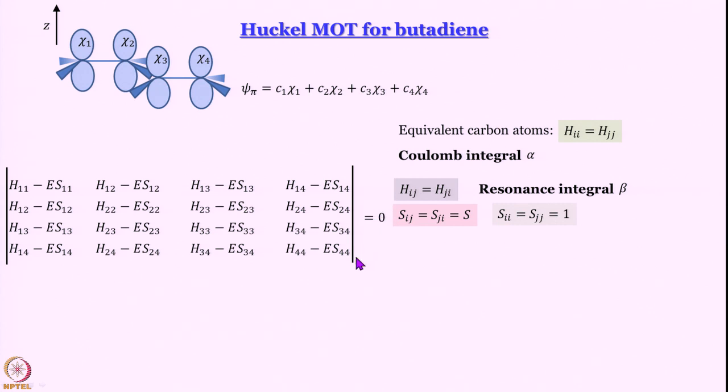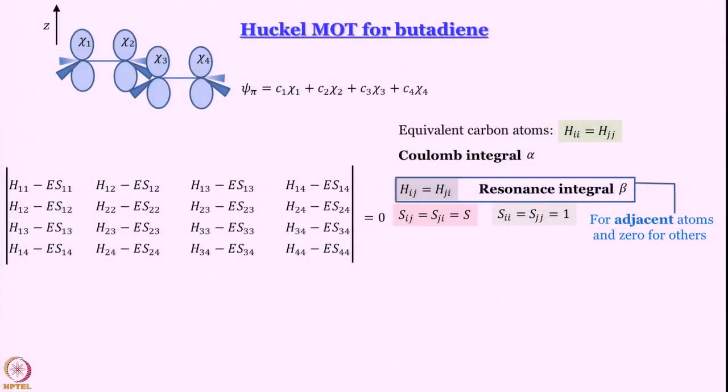Since the problem is a little more complicated it would help if we could bring in some more simplifying factors and that is provided by Huckel theory. We have said already that we set Coulomb integral to 0. What we now say is that this Hij equal to Hji, we said that to be resonance integral beta, only for adjacent atoms and we consider them to be 0 for others.